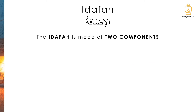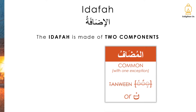The idaafa is made out of two components. The first component is what we call al-mudhaaf. The mudhaaf tends to be common and it doesn't accept tanwin — so no double fatha, dhamma, or kasra — and also doesn't accept the ending nun, which comes at the end of a word when expressing the plural or dual version of it.